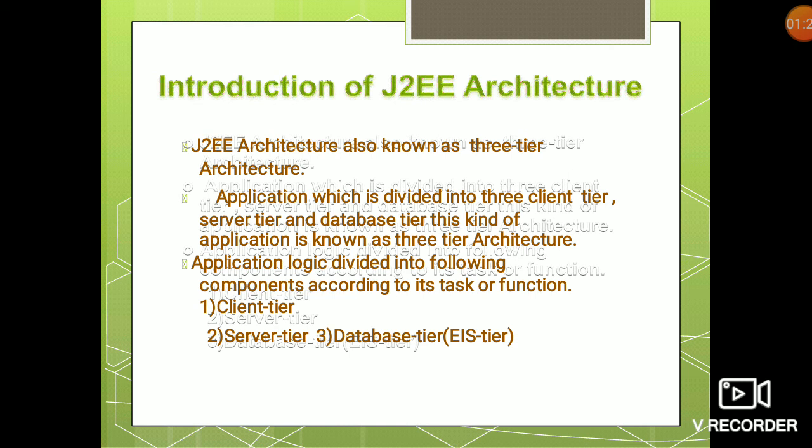The application logic is further divided into the client tier, server tier, and database tier. Application logic is the main logic of any application or system. For example, if you consider YouTube, the main logic of YouTube is to display videos to the user according to their demands.